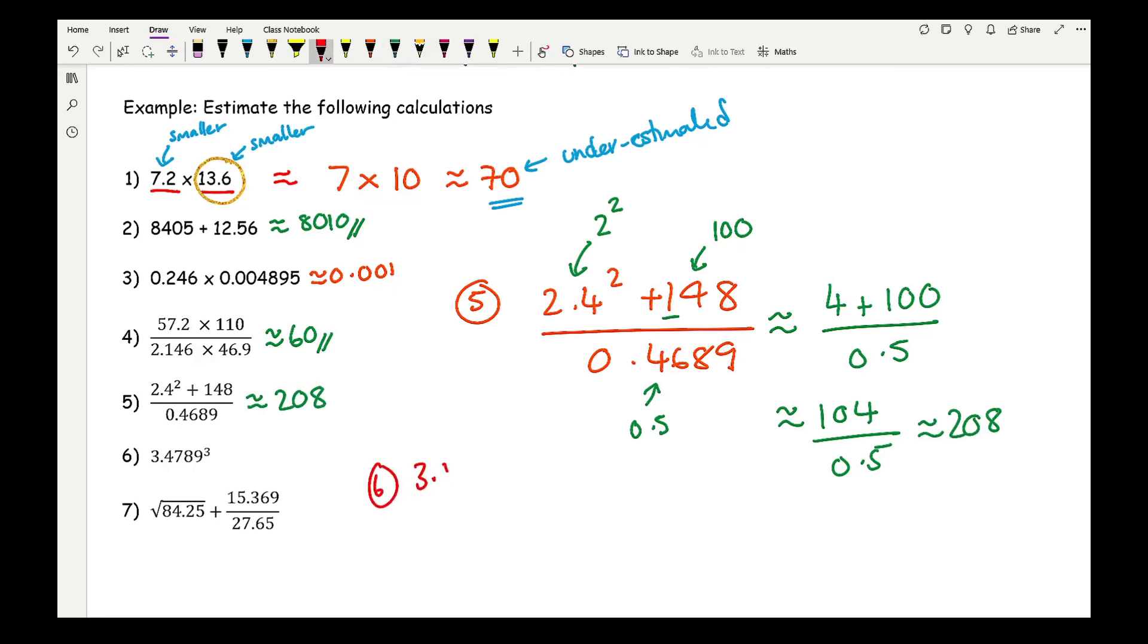Moving on to question 6, we've got 3.4789 cubed. So this number rounded to one sig fig is going to be 3 cubed, and 3 cubed is approximately 27.